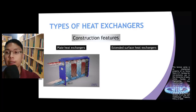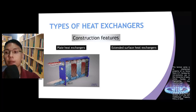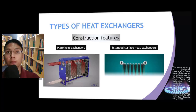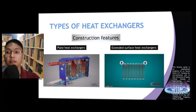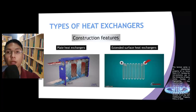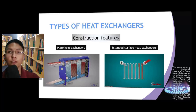The third type is the extended surface heat exchanger. It is built by attaching fins outside the surface of a tube to increase the convection heat transfer surface area.